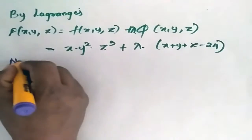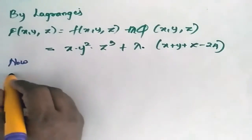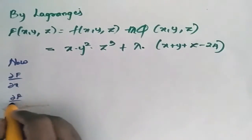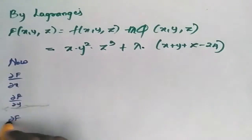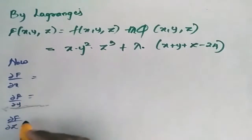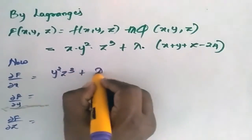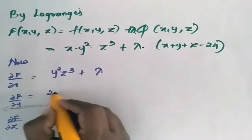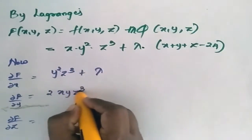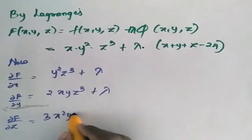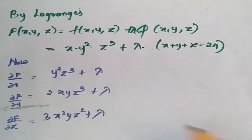Now find the partial derivatives: dou F by dou X is equal to Y²Z³ plus lambda; dou F by dou Y is equal to 2XYZ³ plus lambda; dou F by dou Z is equal to 3XY²Z² plus lambda.